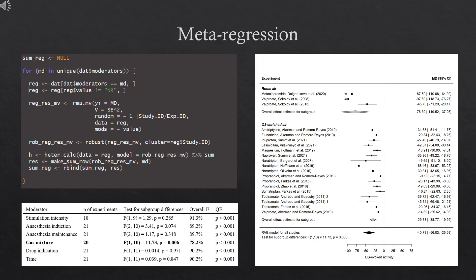The extent to which methodological features explained the observed heterogeneity was assessed using meta-regression. To do this, we simply ran a for loop with the same model, but using the mods argument to specify the values of each moderator. In the study protocol, we specified seven factors, one of which — the gas used for ventilation — accounted for significant variability in the results.